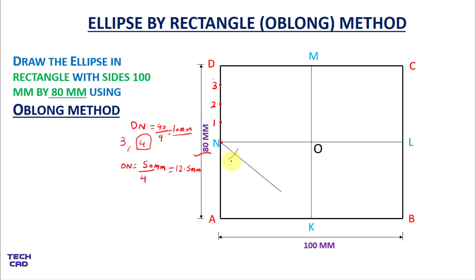Now again take the compass, put it on 1′ and mark another arc. Please remember: do not increase or decrease the compass opening — keep the same opening as from N to 1′. After that, 2′ from 1′ should be equal. Again take the compass, put it on 2′ and mark an arc, so 2′ to 3′ is also the same.